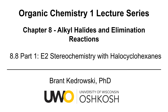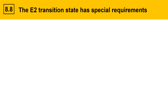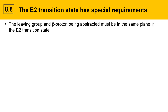Hello everyone, my name is Brant Kedrowski and this organic chemistry video covers E2 stereochemistry with halo cyclohexanes. The E2 transition state has special geometrical requirements, as seen in a prior video. The leaving group and the beta proton being abstracted have to be in the same plane for the E2 transition state.